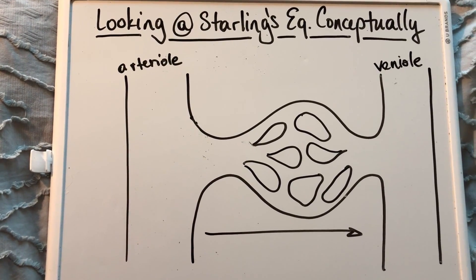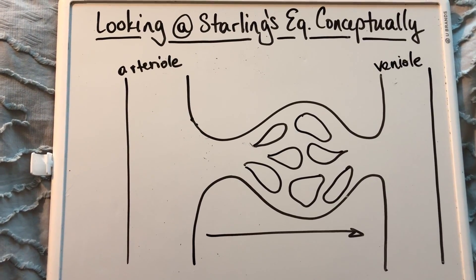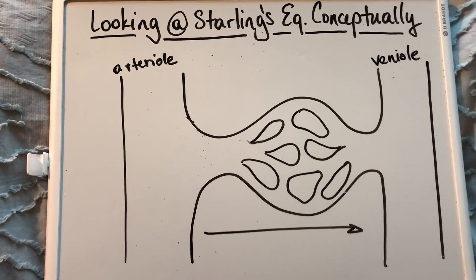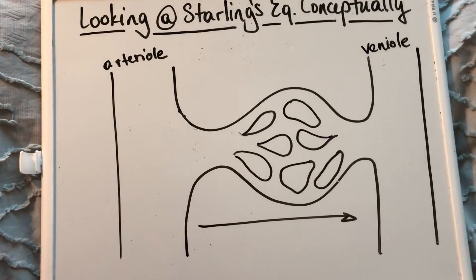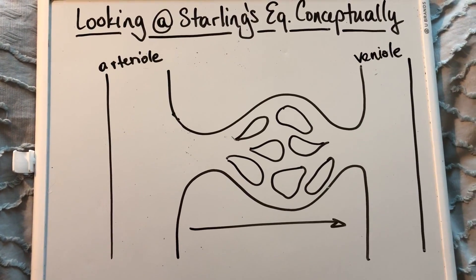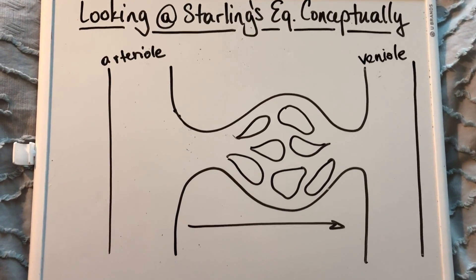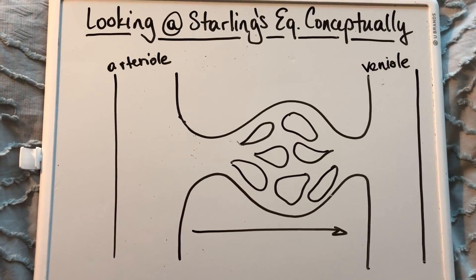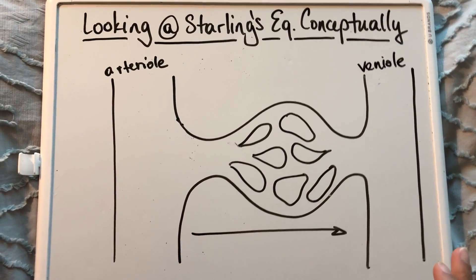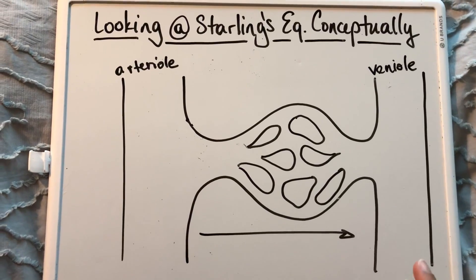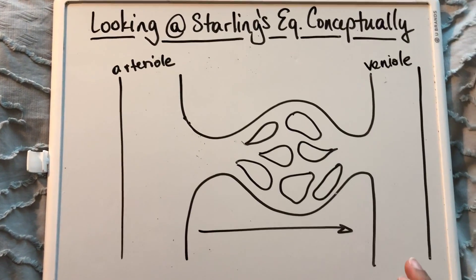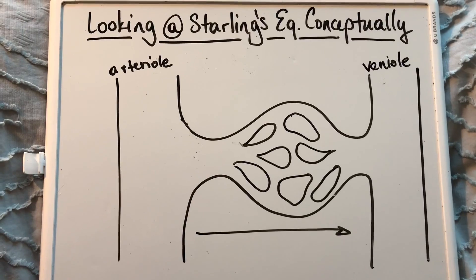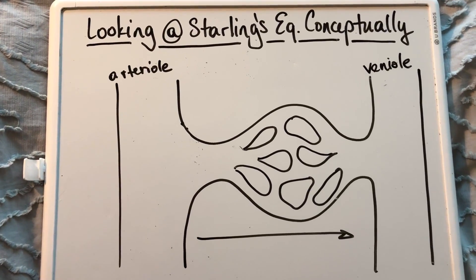I'm going to go over the conceptual underpinnings of Starling's equation. I'm not going to go over the equation itself or any of the math, just the conceptual framework, which hopefully I'll explain clearly enough. Feel free to correct me — absolutely welcome criticism.